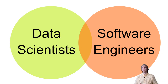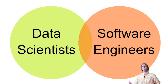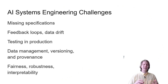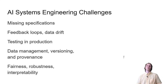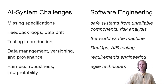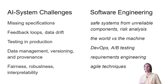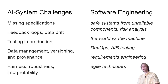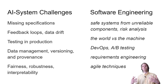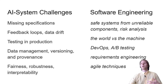To build these kinds of systems, you need the expertise of data science — who can do the models — and software engineers to actually build robust systems. There are lots of problems that come with AI components like missing specifications, feedback loops, and so on. But we also argue that software engineers have a lot to contribute. For example, we have a lot of experience building safe systems from unreliable components, and experience with risk analysis and requirements at the interface between the world and the machine.